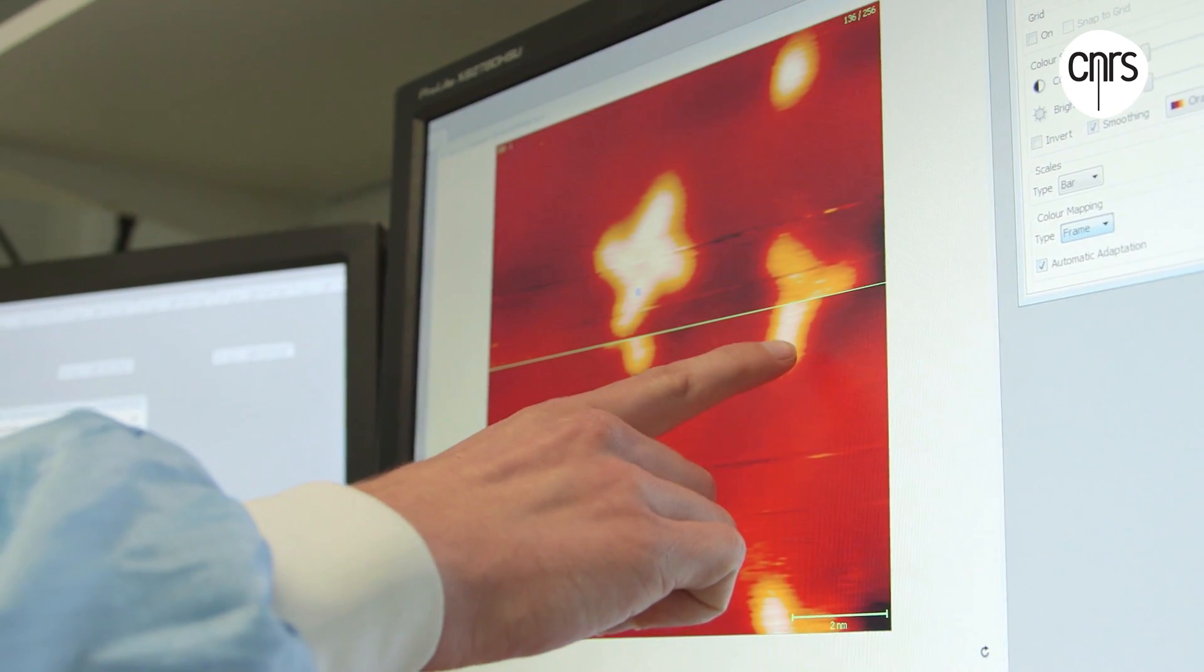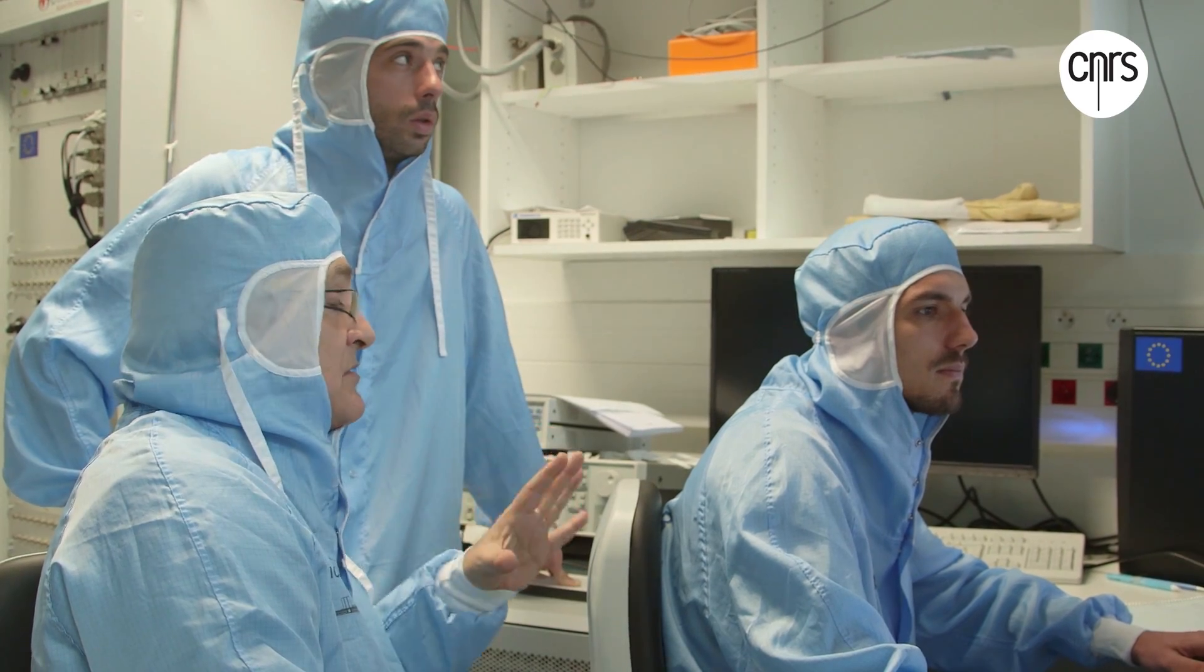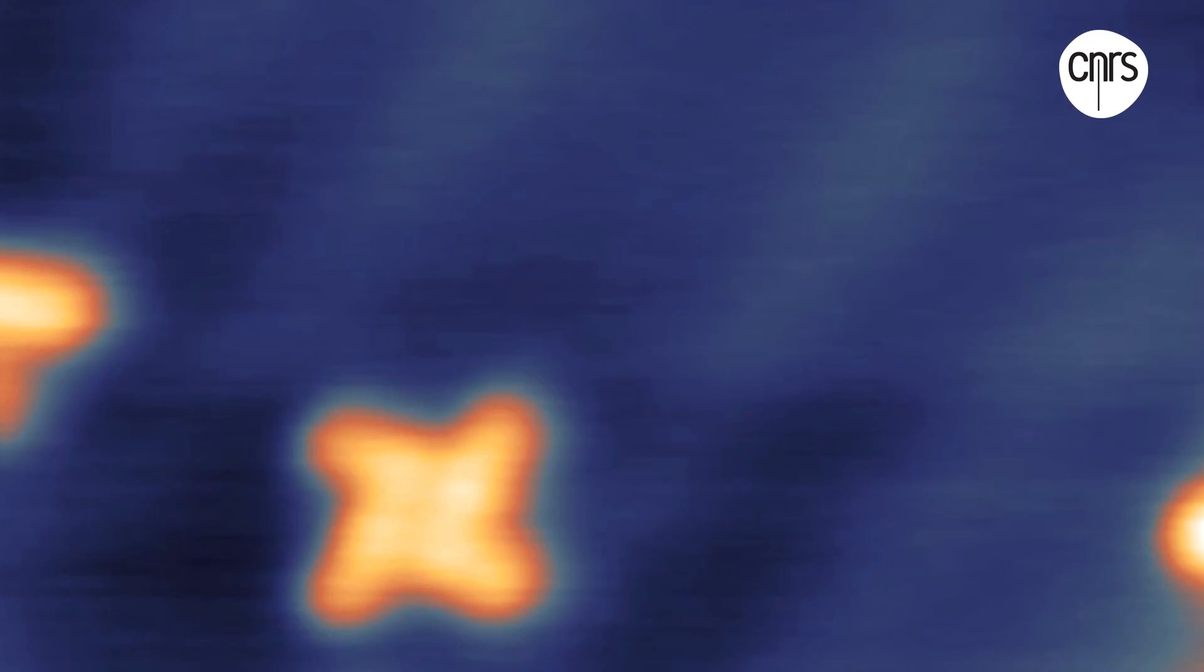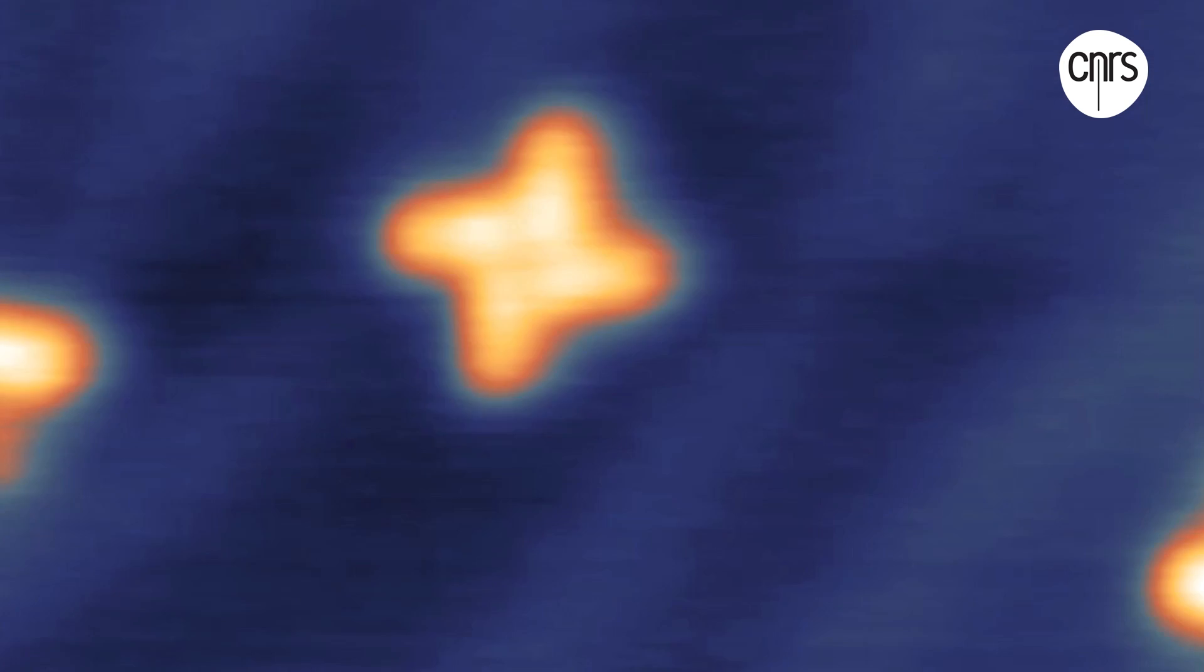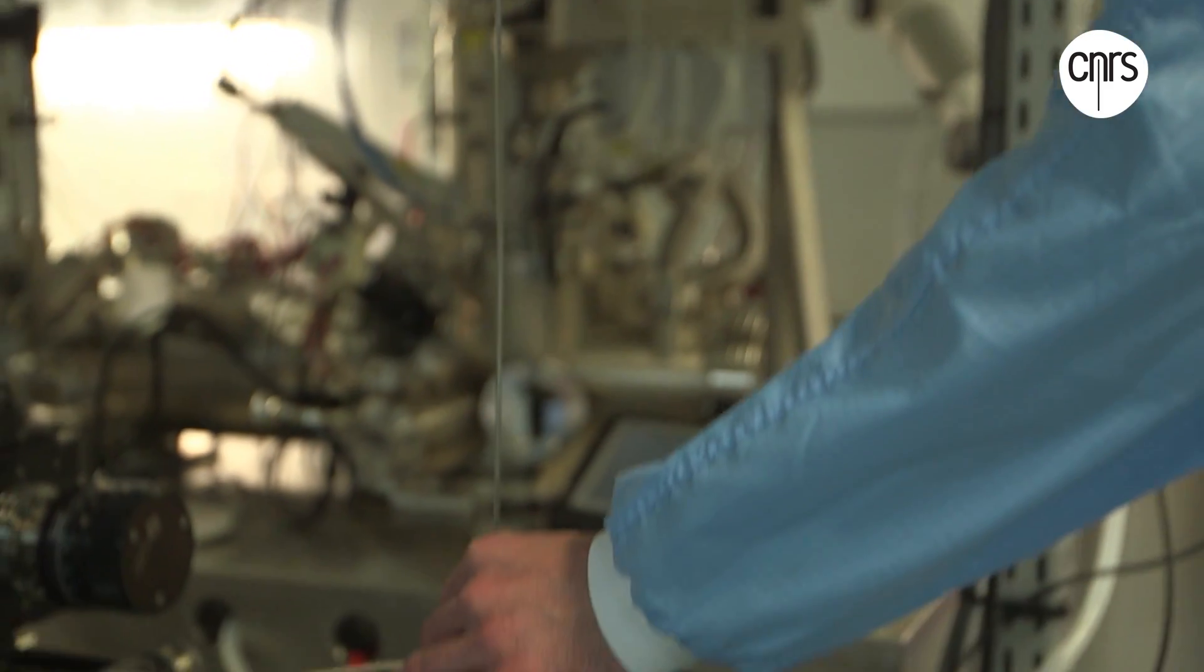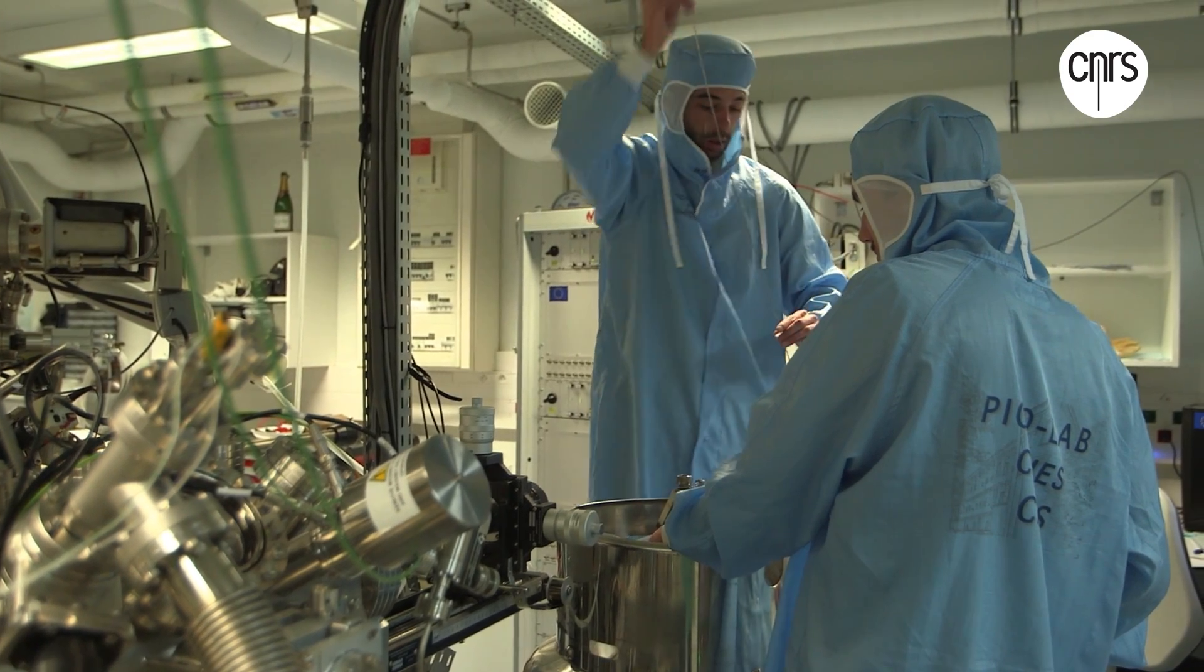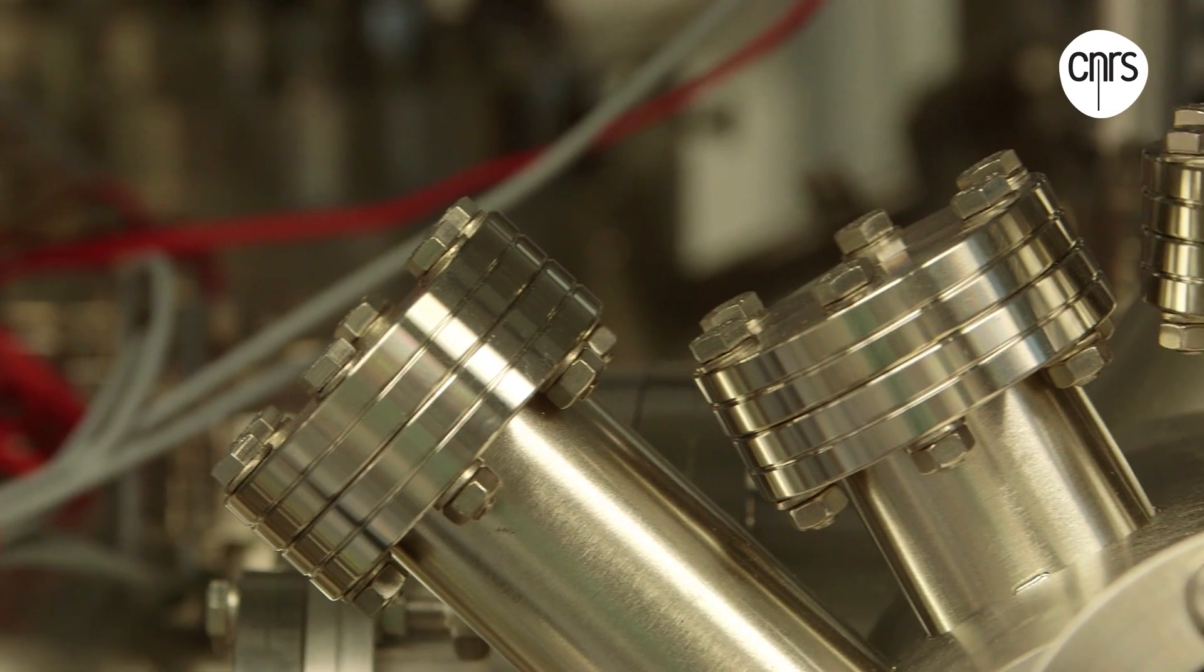The tip of the microscope scans and analyzes a given surface and gradually renders an image on the control screens. But not only does it read what's on the surface, it also transfers electrons that can then stimulate the nanocars, driving them down the track. These racing conditions are particularly hostile. The track is maintained at minus 270 degrees Celsius, and at this infinitely small scale, the laws of physics are drastically different from those we encounter in our macroscopic world.